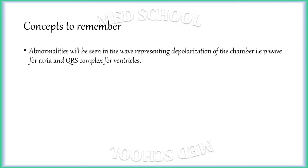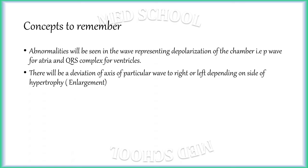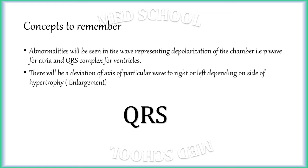The most important concept to remember in cases of cardiac chamber enlargement or hypertrophy is that abnormalities will be seen in waves representing depolarization of the chamber — that is P wave for atria and QRS complex for ventricle — and there will be deviation of axis of that particular wave toward right or left depending on the side of hypertrophy. So in cases of ventricular hypertrophy, changes will be seen in QRS complex with deviation of QRS axis.